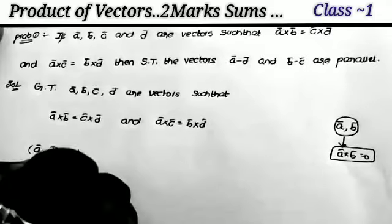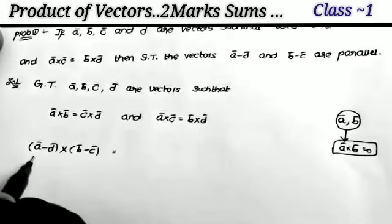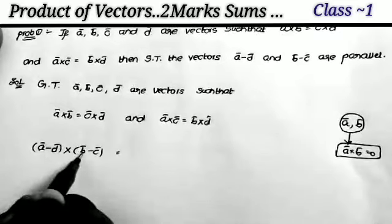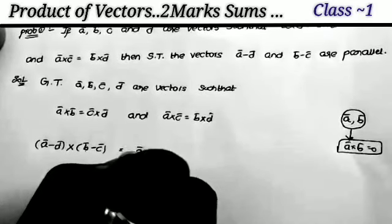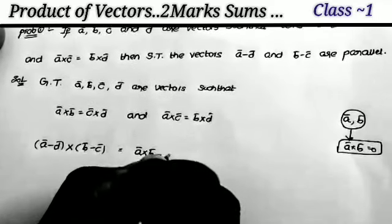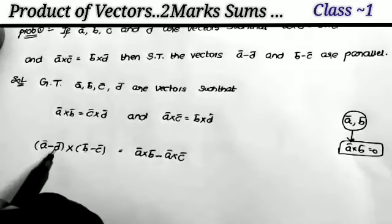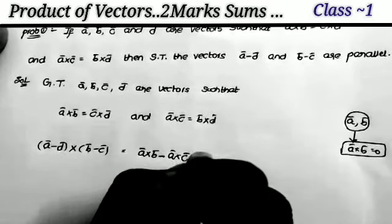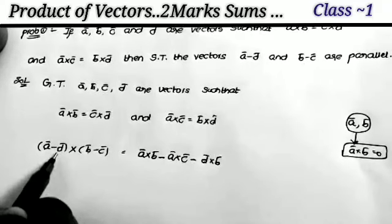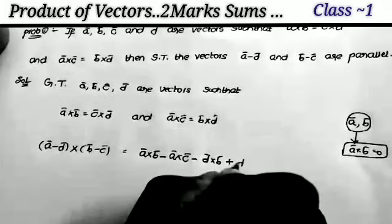Take the cross product of the two vectors: (a minus d) cross (b minus c). Expanding: the first vector cross the second vector gives a cross b; first vector cross the last term gives minus a cross c; the third term cross the second gives minus d cross b; and the last terms give plus d cross c.